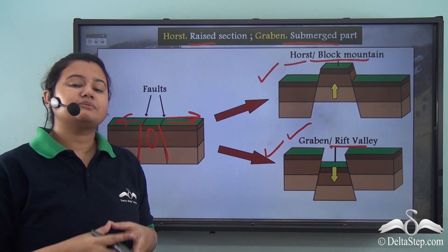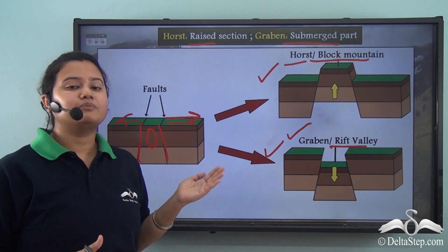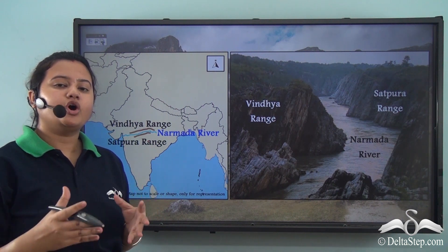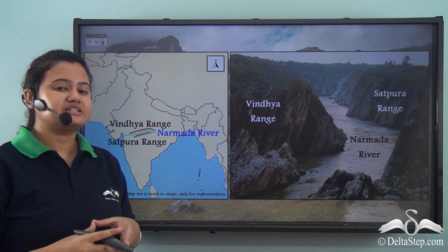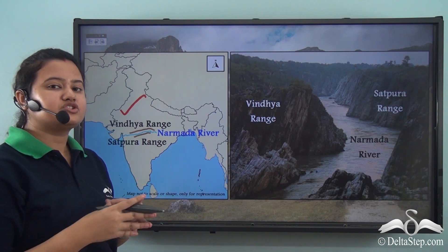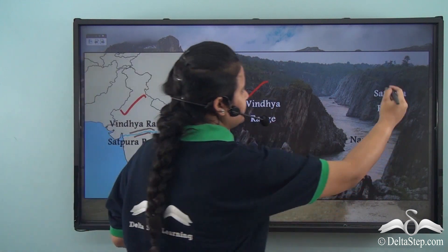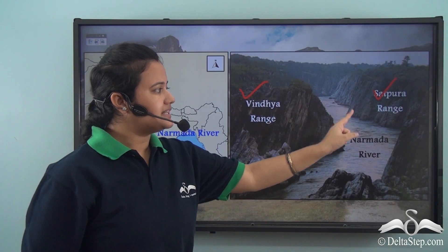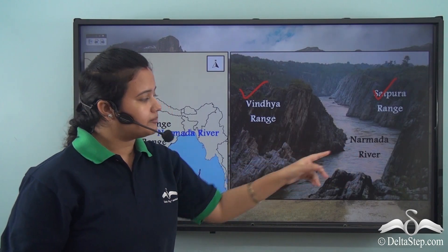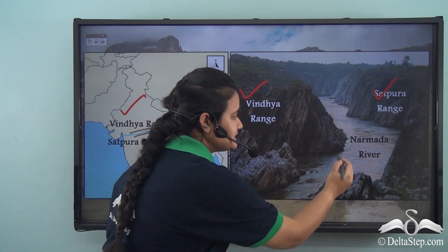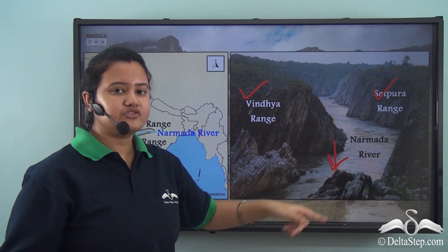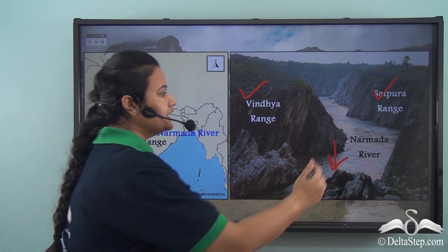Now let us look at some examples of block mountains. A rift valley between two block mountains is present in the central part of India. An example of such mountain ranges is the Vindhya range and the Satpura range, which are two block mountains.